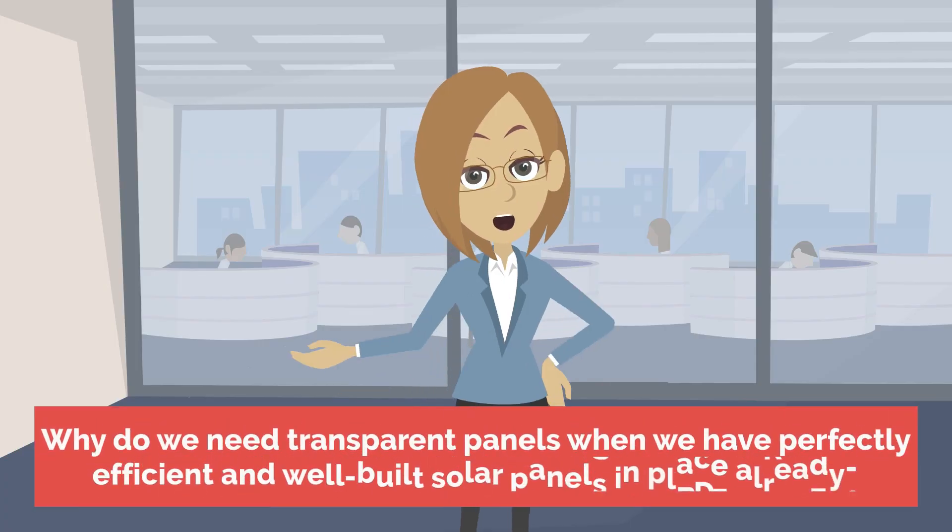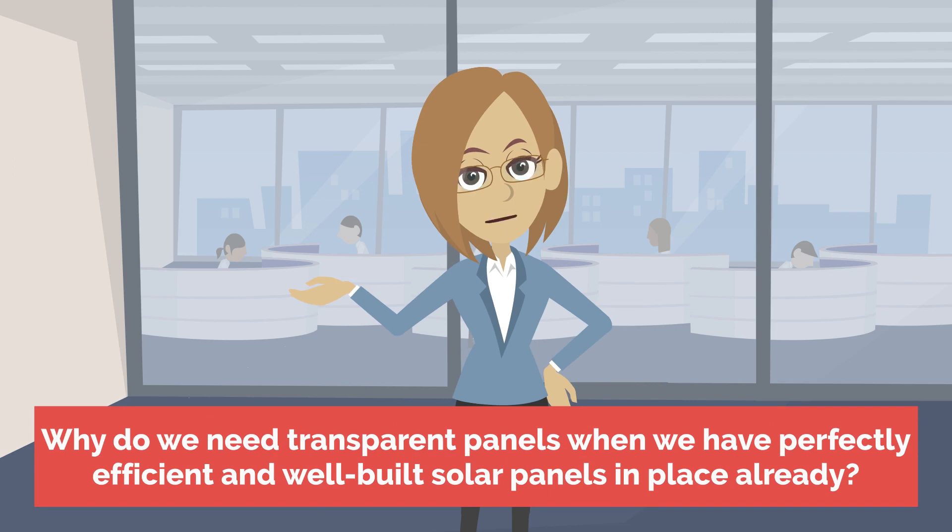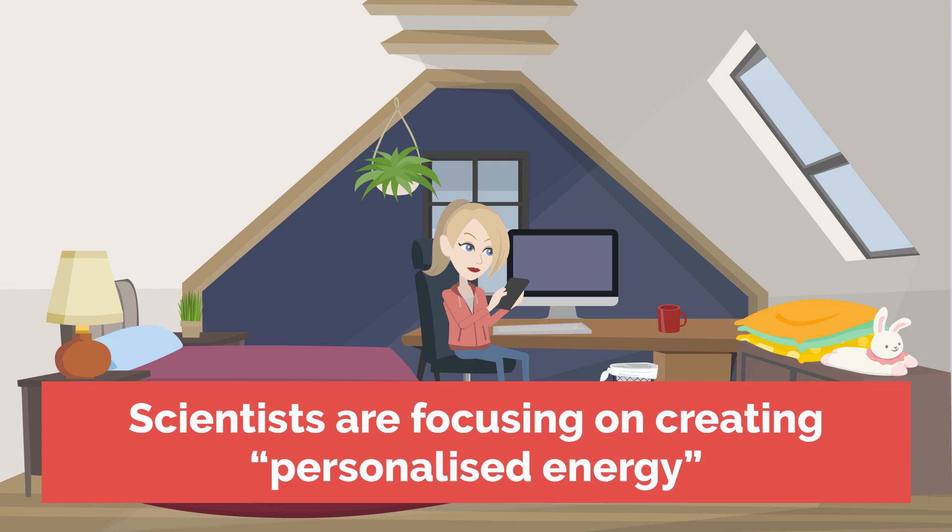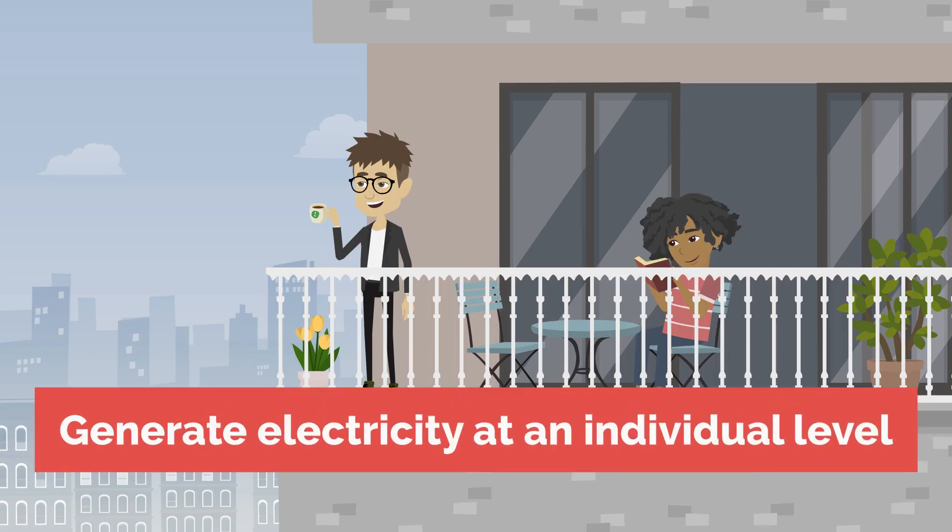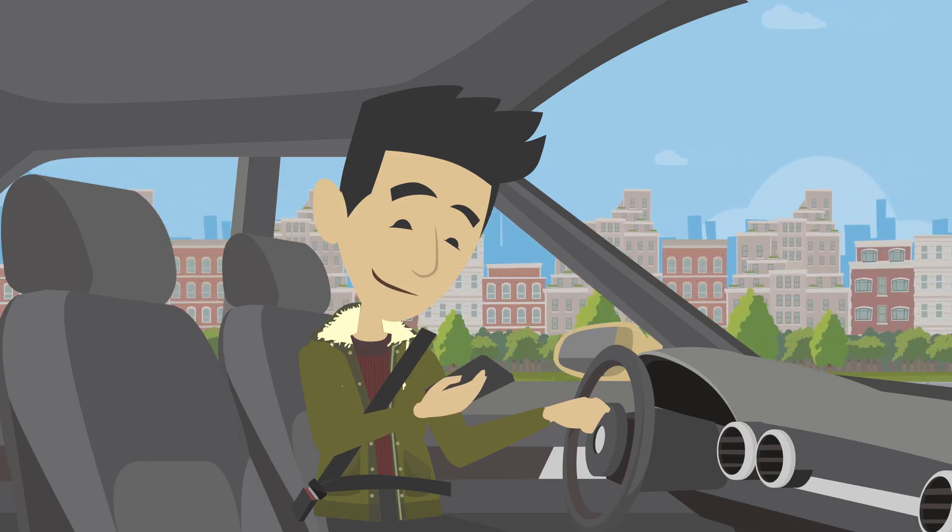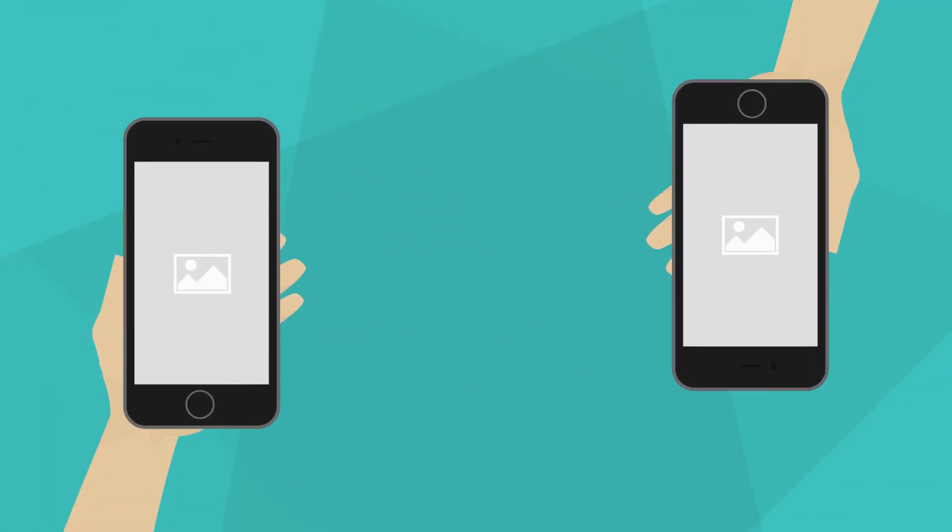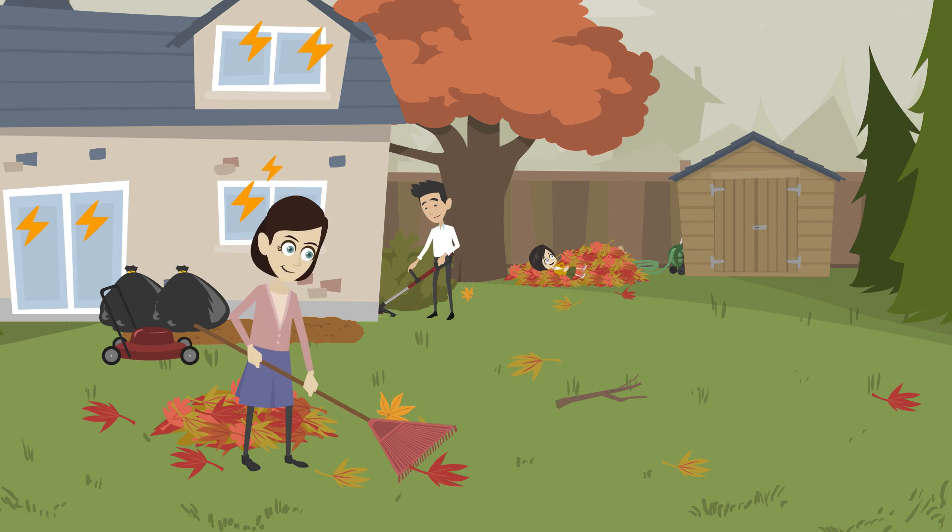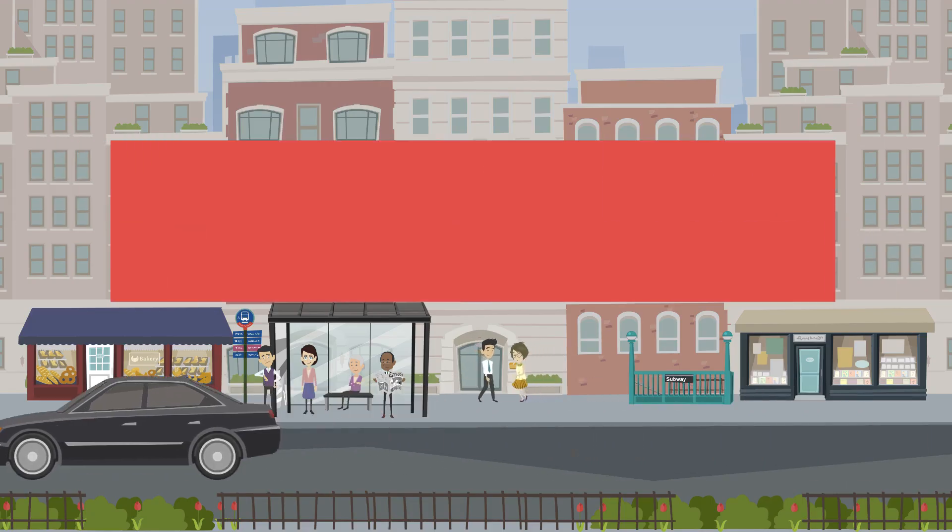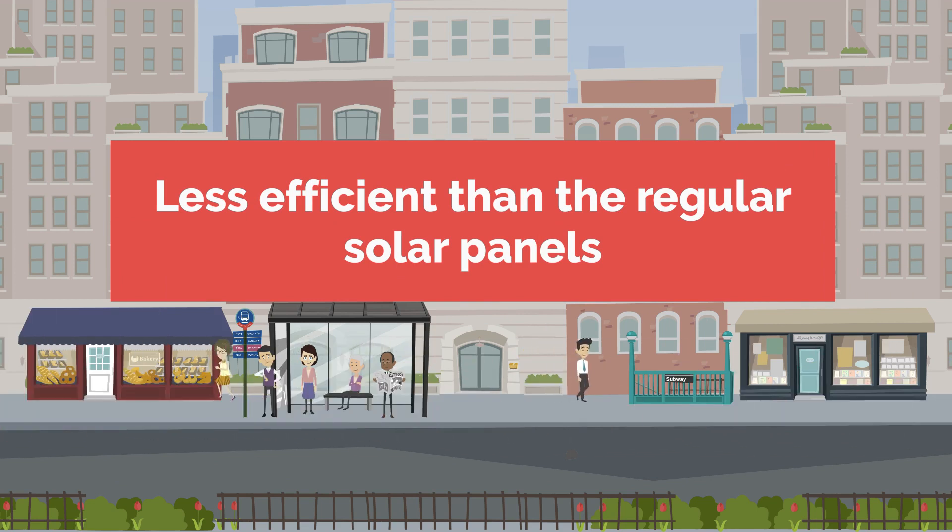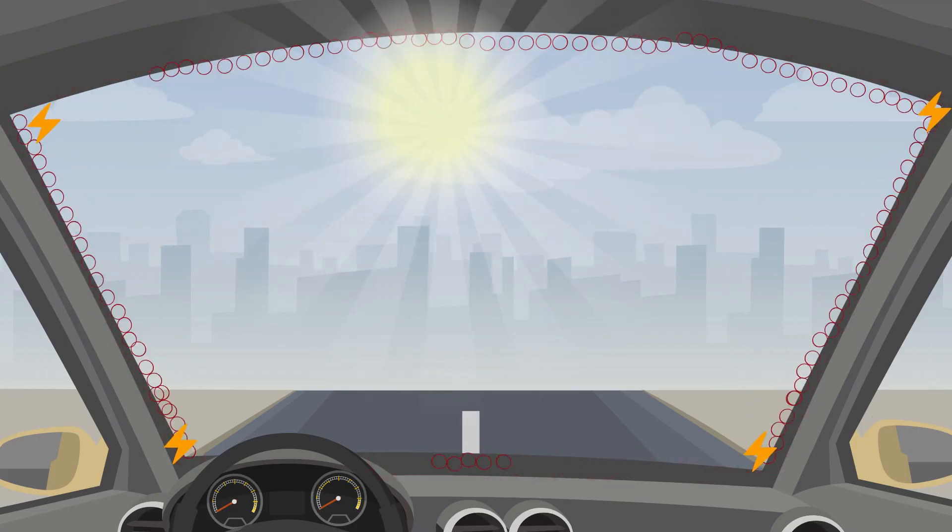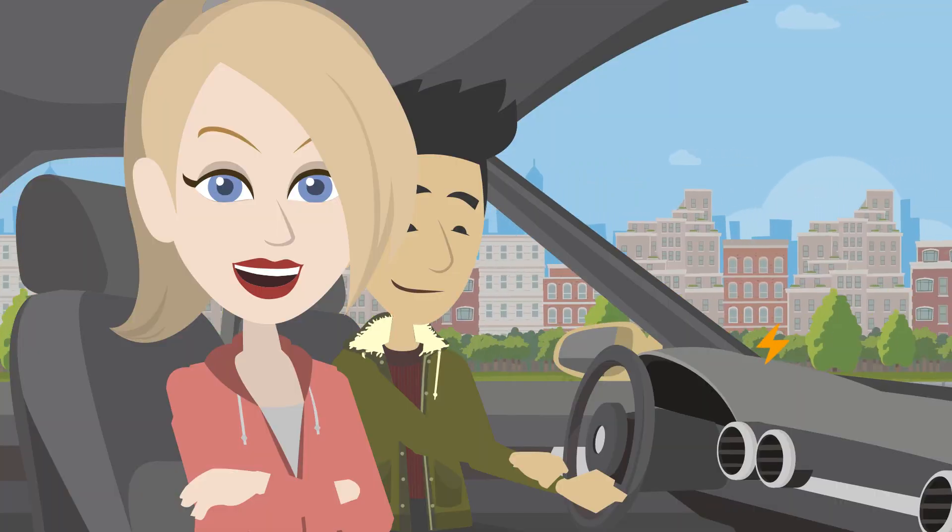But why do we need transparent panels when we have perfectly efficient and well-built solar panels in place already? Scientists are focusing on creating personalized energy which would allow users to generate electricity at an individual level. By simply transforming windows in cars, buildings, and cell phone screens into a solar panel, each person can generate adequate electricity for himself. Therefore, even though this new technology is less efficient than the regular solar panels, once it is deployed on a large scale in buildings, vehicles, and everyday places, it can give equally high returns of energy generation.